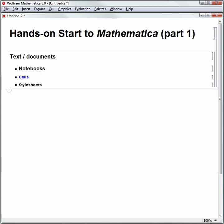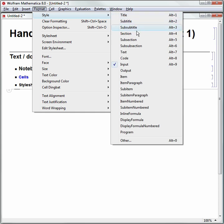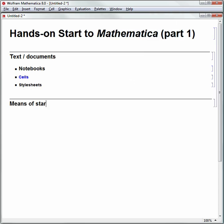Let me make a new section cell. I'll go to Format, Style, and Section, and we'll call this Means of Starting. Hit the down arrow key, or you can click your mouse to make that horizontal line to start a new cell.